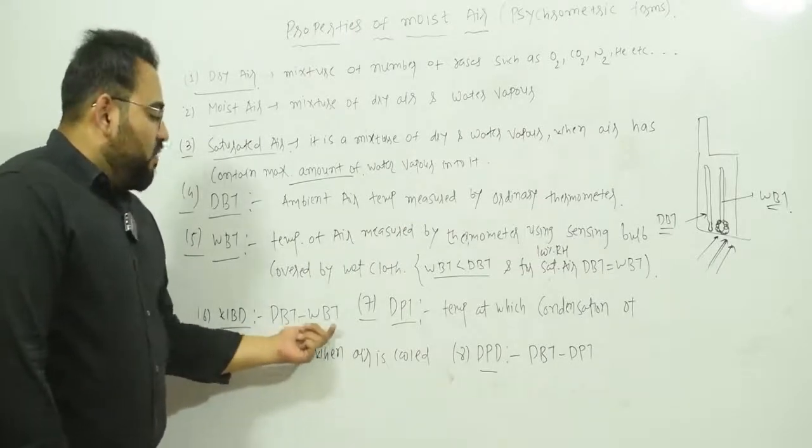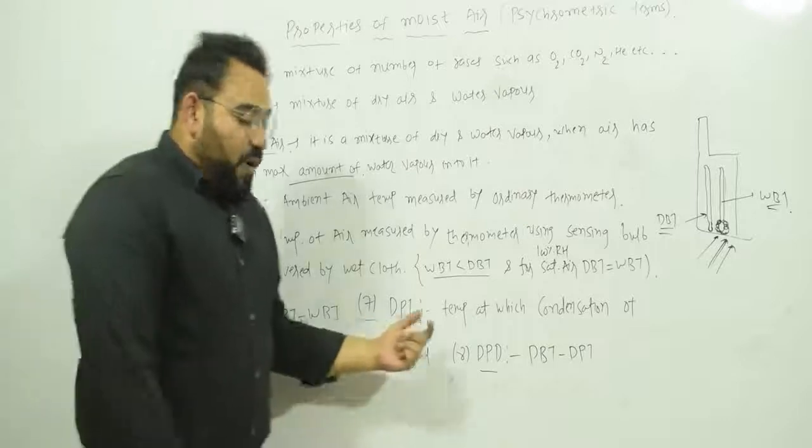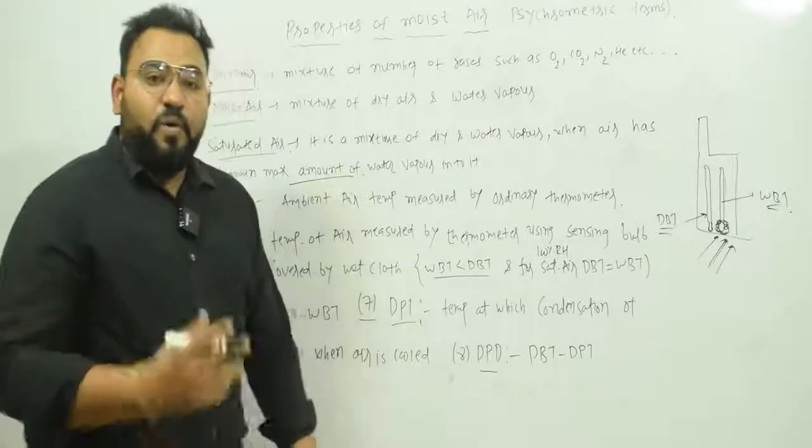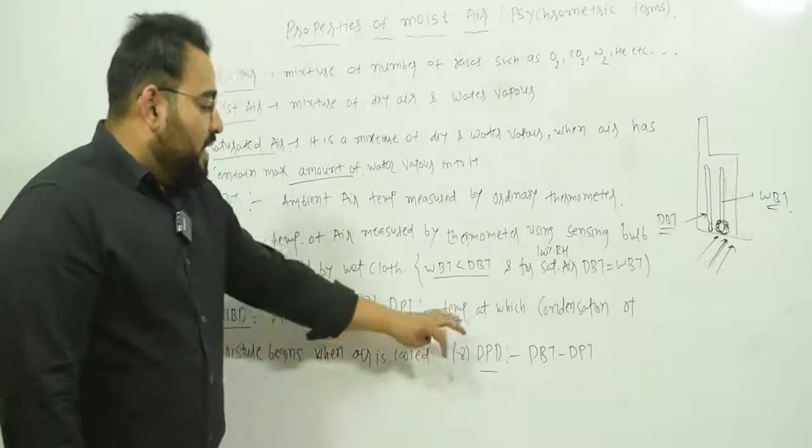The sixth term is wet bulb depression. It is defined as the difference between dry bulb temperature and wet bulb temperature: wet bulb depression equals dry bulb temperature minus wet bulb temperature.